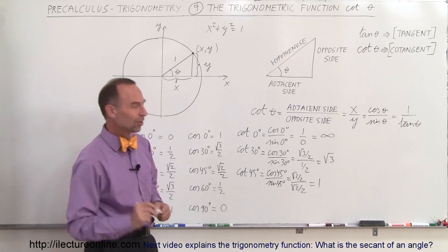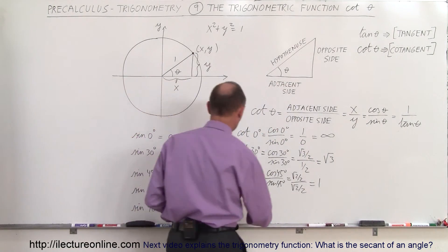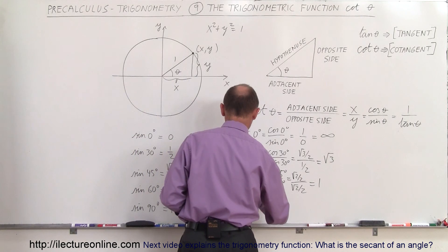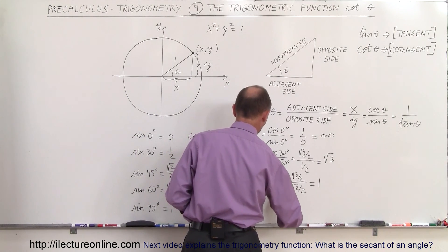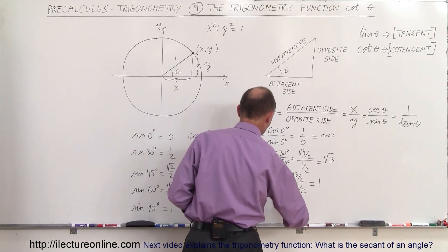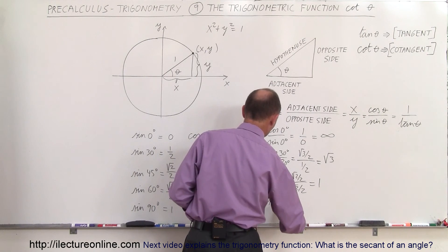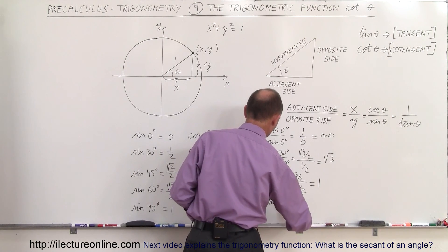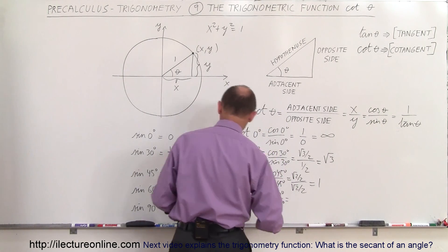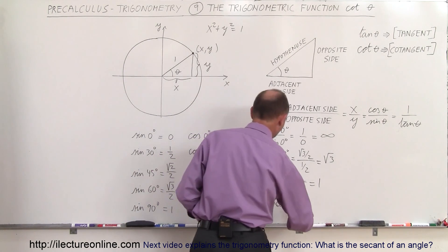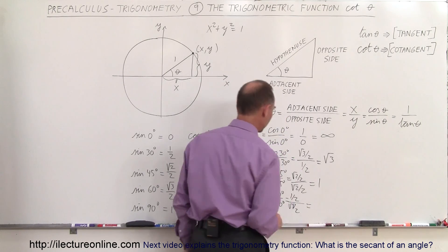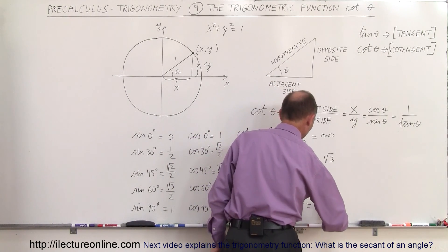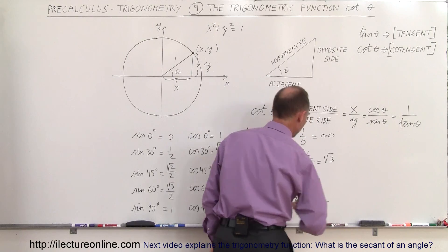The cotangent of 60 degrees is equal to the cosine of 60 degrees divided by the sine of 60 degrees, which is 1 half divided by the square root of 3 over 2, which equals 1 over the square root of 3.